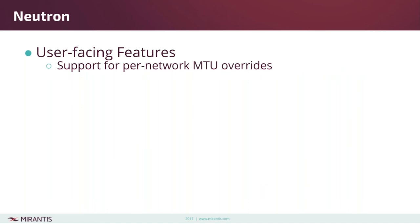Quite a bit of effort was spent in the Newton/Mitaka timeframe to get all the MTU calculations correct inside Neutron. However, the MTU value was coming from a global configuration. This works fine for most cases but there are scenarios where operators want large MTUs by default across all networks but have a particular network that's constantly communicating with devices on smaller MTU networks, which creates MTU path discovery problems. In Pike you now have the ability to set an MTU override for a given network.